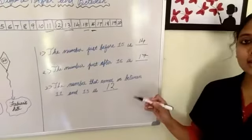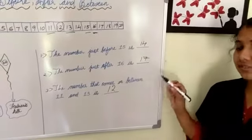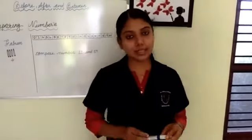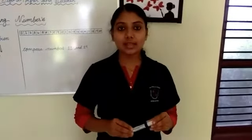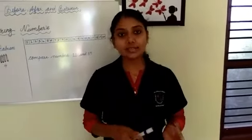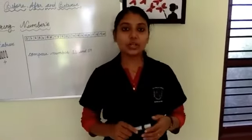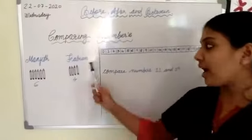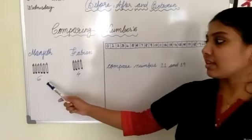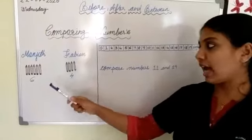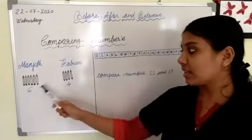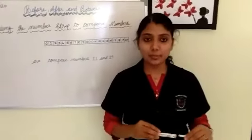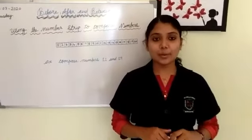This exercise is in your textbook page number 77, so all of you pause this video and do it. Now we move on to the next topic: comparing numbers. When you compare 2 numbers, the number that shows more quantity is the greater or bigger number and the number that shows less quantity is the smaller number. Here Manjan has 6 pencils while Fabian has 4 pencils. 6 is greater than 4, so Manjan's pencils are more than Fabian's.